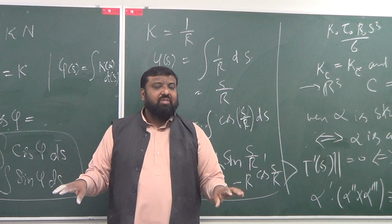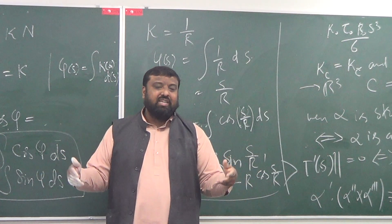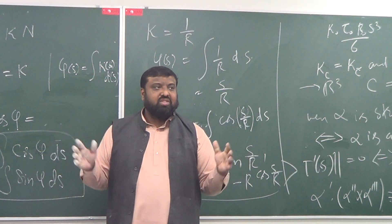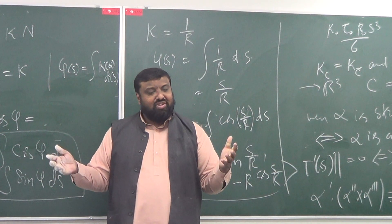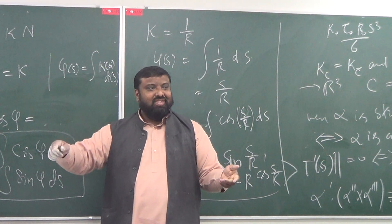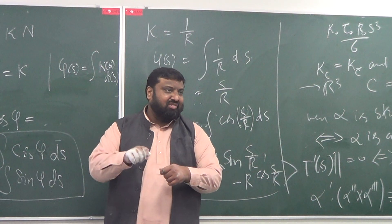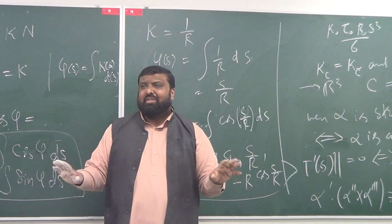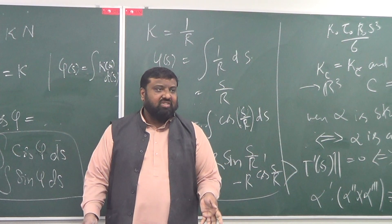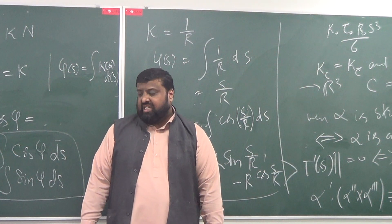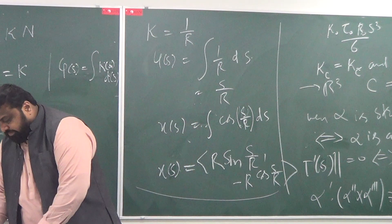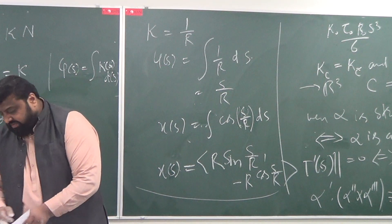You can turn any curve into a unit speed parameterization. The original curves may represent non-uniform motion of a particle, but you can always turn them into a uniform motion whose behavior is the same as the non-uniform motion. So for any arbitrary curve, this intrinsic equivalence holds.